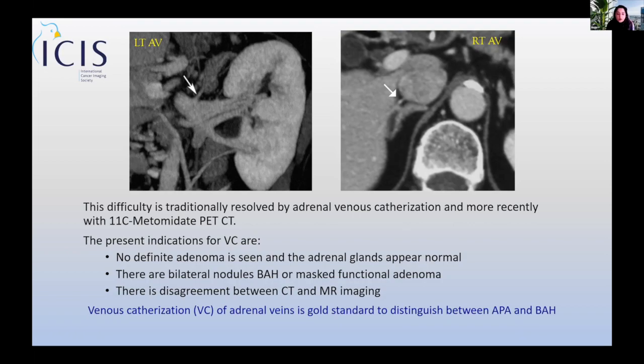AVS is now done only when no adenoma can be found despite biochemically confirmed hyperaldosteronism, when bilateral nodules are present and the side for surgery is uncertain, or when there is disagreement between CT and MR. It is considered the gold standard for distinguishing APAs from bilateral adrenal hyperplasia. Increasingly, however, carbon-11 metomidate PET is being used where available, as it localises APAs well.